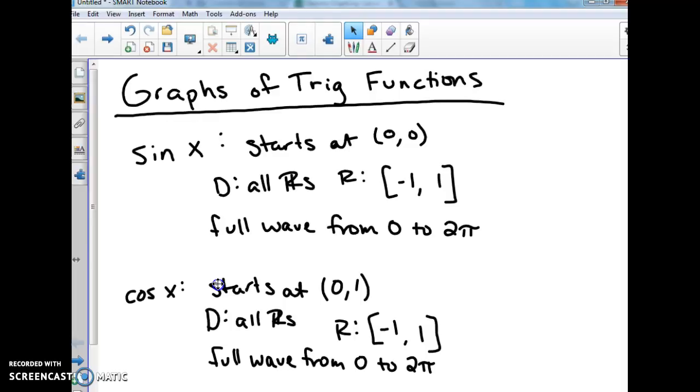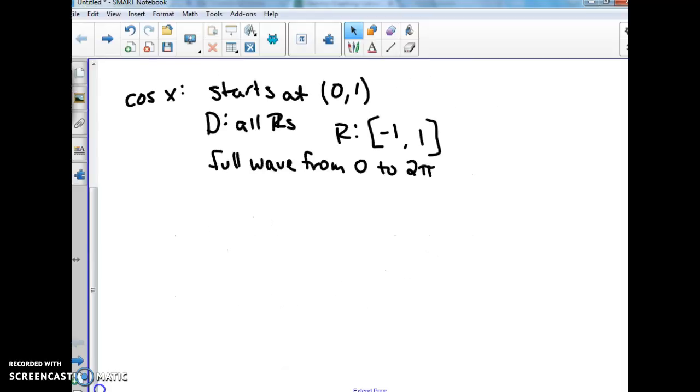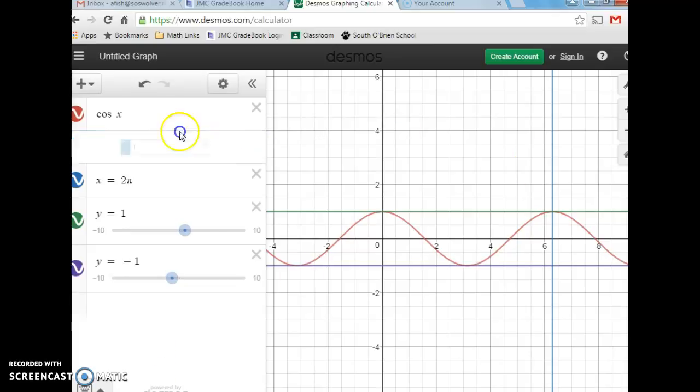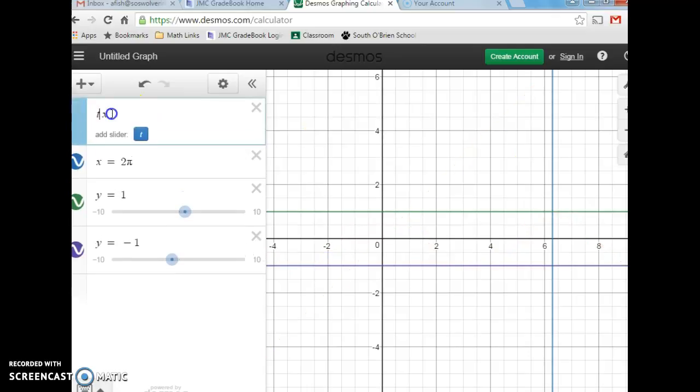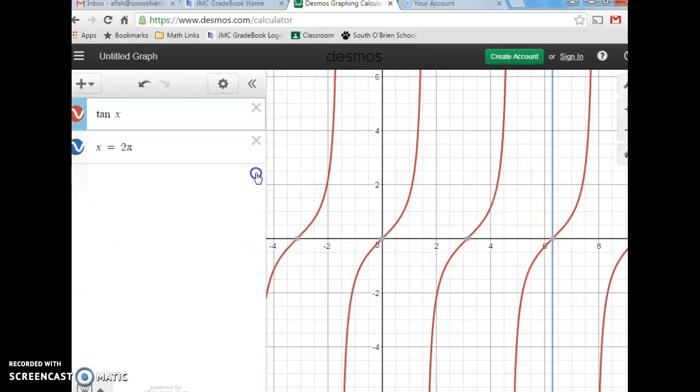So then, last but not least, is going to be our tangent function. I'm still going to leave the three values there. We'll see what happens. Uh-oh. This looks a little different. I can see here that my range is not going to be affected by that y equals 1 and y equals negative 1. So I'm just going to cross those out.